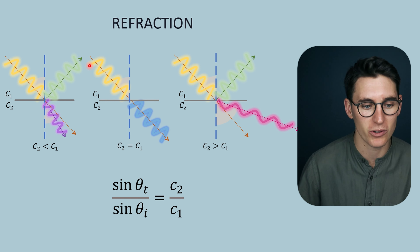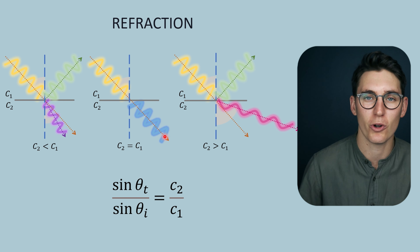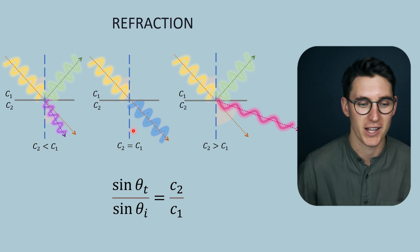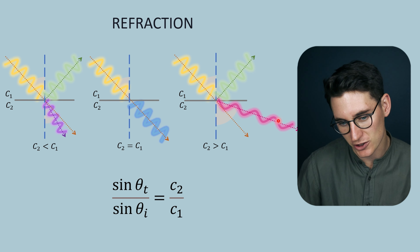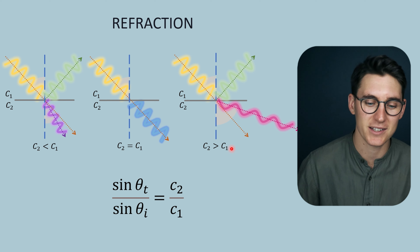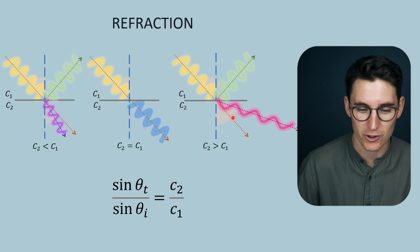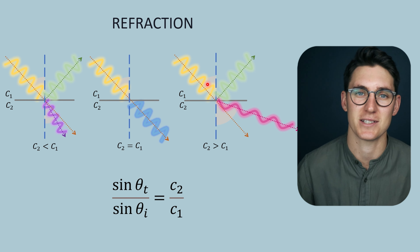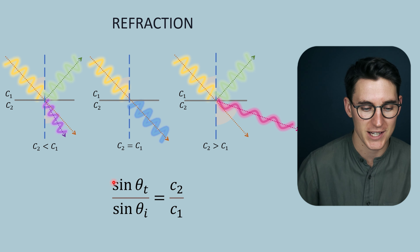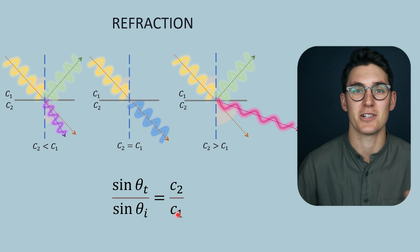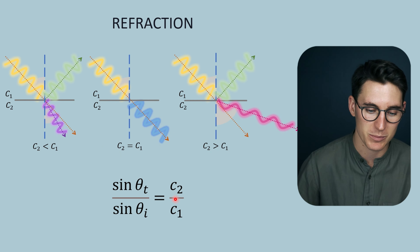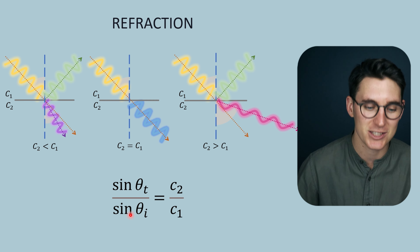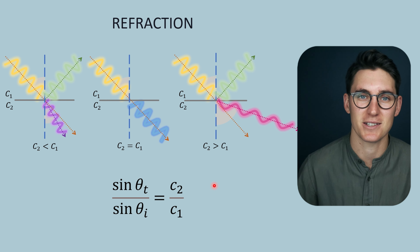When the speed of sound is equal in both tissues, we get no change in angle — no refraction — and the ultrasound pulse continues on as if nothing had happened. When the speed of sound in the transmitted medium is higher than in the incident medium, the transmittance angle is greater than the incidence angle. Using the formula: sine(θ_transmittance) divided by sine(θ_incidence) equals the speed of sound in the second tissue over the speed of sound in the first tissue. The ratio of speeds equals the ratio of the sine of the angles.